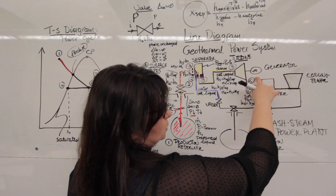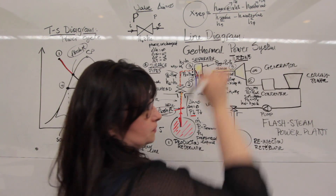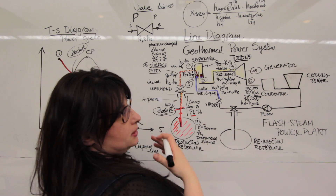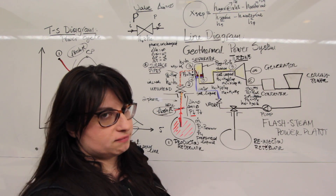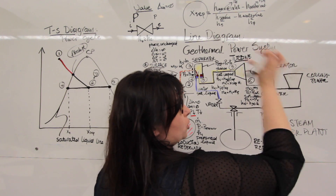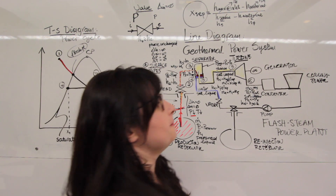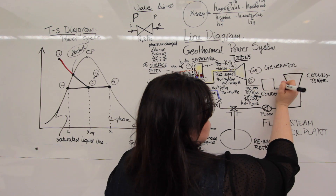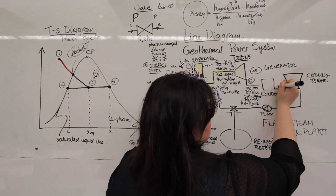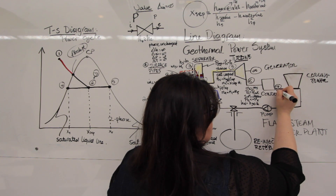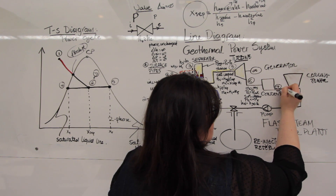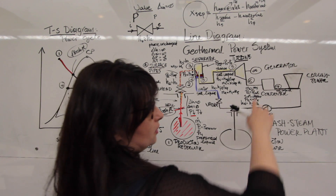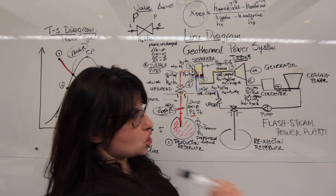The saturated steam leaves the turbine and enters the condenser. What's the job of the condenser? Well, to condense — that means it will turn the steam, the saturated vapor, into water, into saturated liquid. So coming in is saturated vapor, and coming out at state point 7, we have saturated liquid.